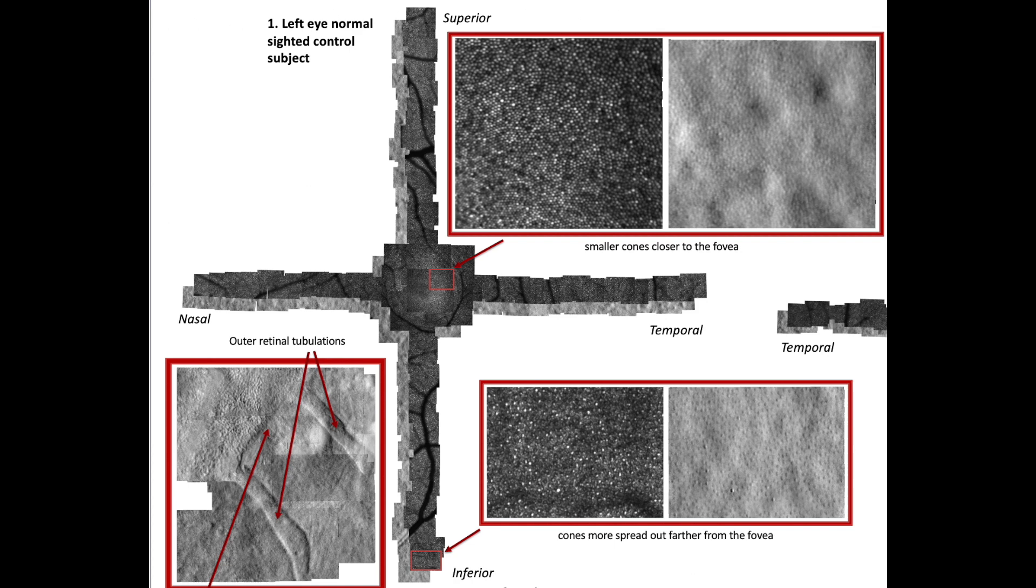The first montage in the upper left corner is the left eye of a normal sighted control subject. As you can see, the shape of each cell in the mosaic is clearly defined, and the white dots, which are wave-reflecting cones, are densely packed closer to the fovea and increase in size as the distance from the fovea increases.